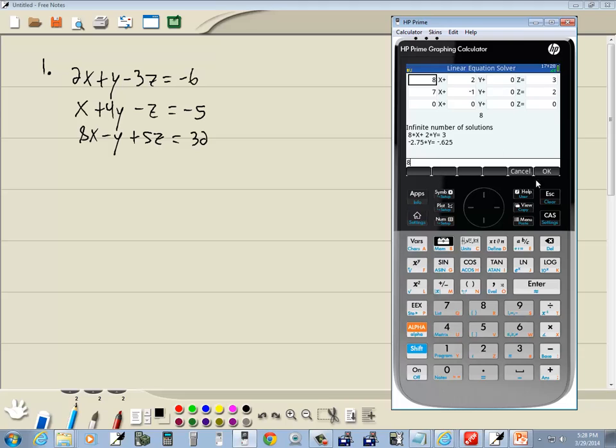It'll probably bring up 2x2 by default, but you can choose 3x3, so I'll click that there. We'll type in each number that's in front of a variable. So, 2, enter, 1, enter. As I type, it overwrites what's there. Negative 3, enter, negative 6, enter. 1, enter, 4, enter, negative 1, enter, negative 5, enter. 8, enter, negative 1, enter, 5, enter, and 32, enter.